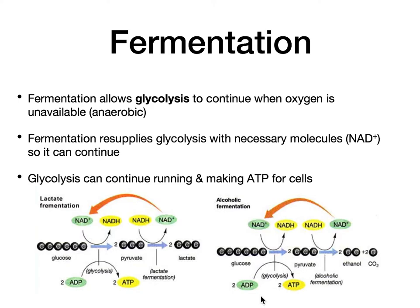Fermentation resupplies the raw materials glycolysis needs so it can keep running and making two ATP, over and over, continuing to break apart sugar and get energy. The specific molecule glycolysis runs out of is NAD+. During fermentation, more NAD+ is produced and fed back into glycolysis, allowing it to continue making ATP. You can see both types of fermentation illustrated here: lactic acid fermentation on the left and alcoholic fermentation on the right.